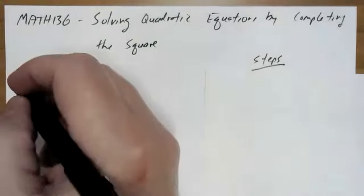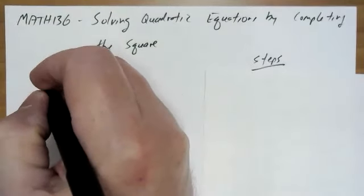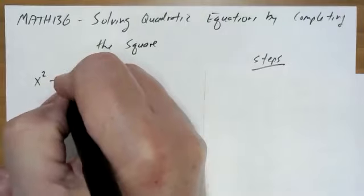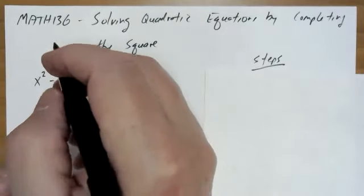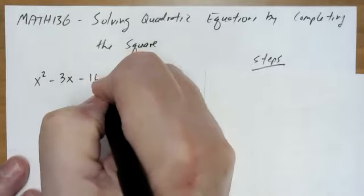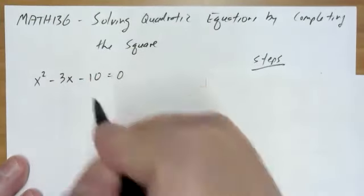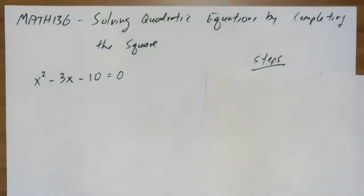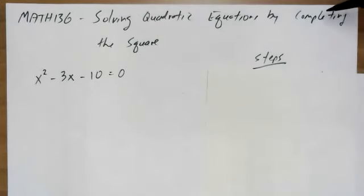I'll do two problems. The first one is a pretty straightforward quadratic equation. If I was given this problem, I would solve it probably by just factoring. But let's go ahead and learn how to use the method of completing the square, because there are times when we need to use completing the square.